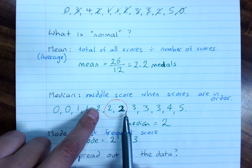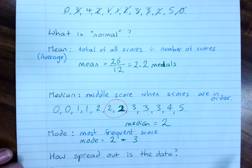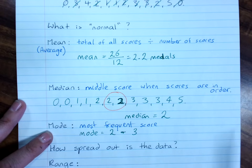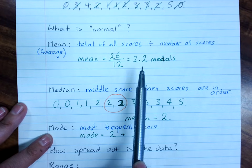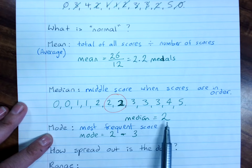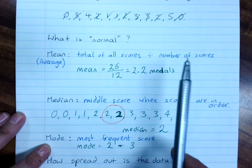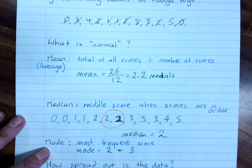So if there's a score that ties for first, for most frequent, we count them both. So those are my three ways of saying, hey, this is normal. So the average, the mean, says 2.2 medals is pretty normal. The median says two is pretty normal. And the mode, two or three, pretty normal. And that looks about right for this class. Two or three medals is pretty normal.